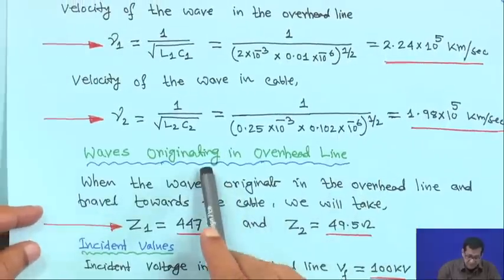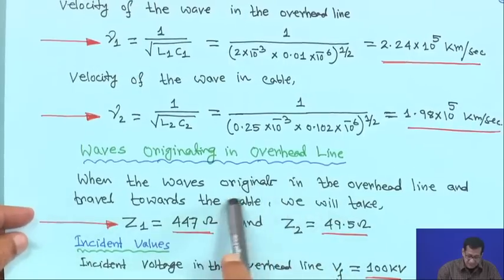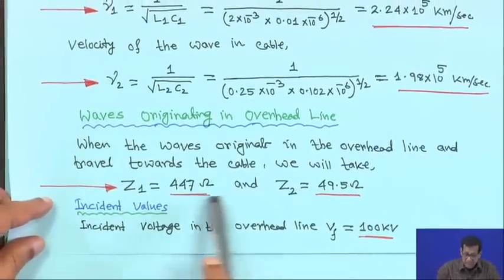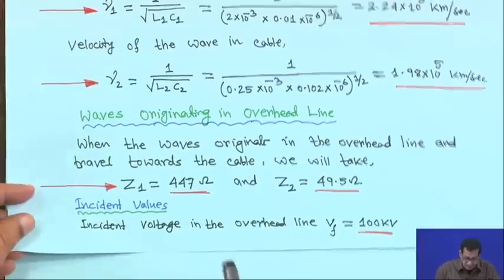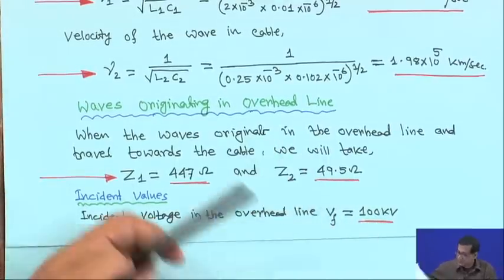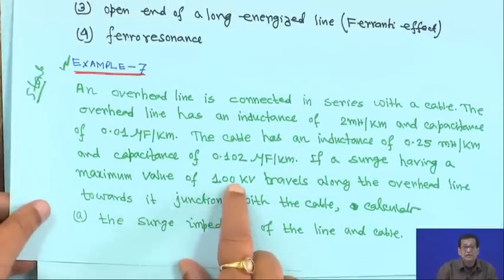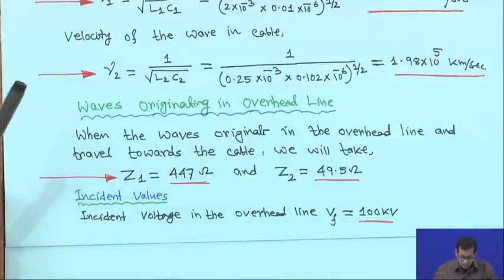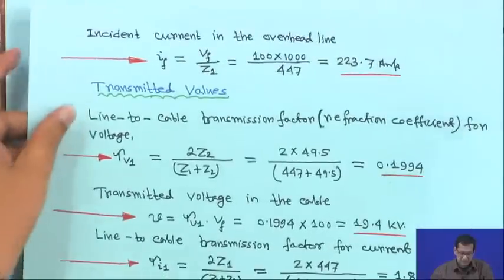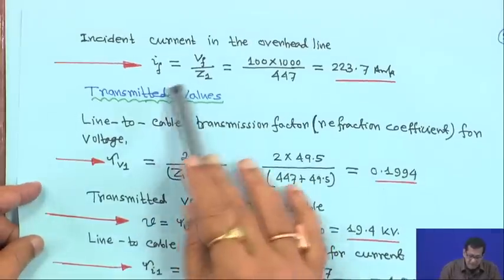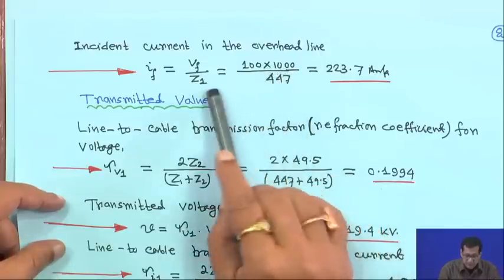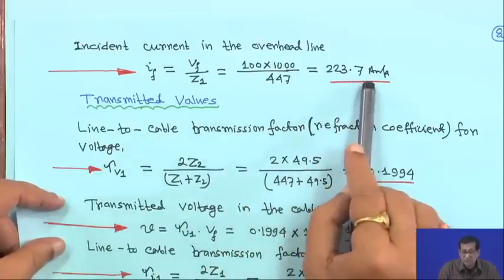Now, for waves originating in the overhead line: Z1 equals 447 ohms and Z2 equals 49.5 ohms. The incident voltage in the overhead line is given as 100 kV. So incident voltage Vf equals 100 kV, and incident current If equals Vf upon Z1, which is 100,000 divided by 447, giving 223.7 amperes.